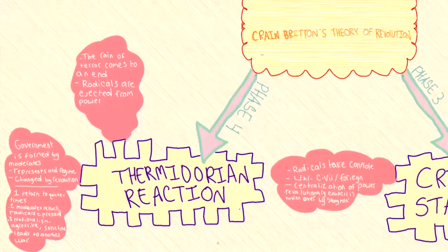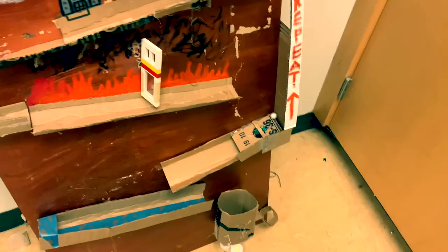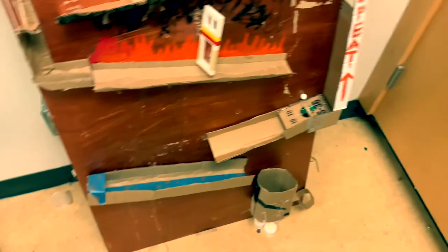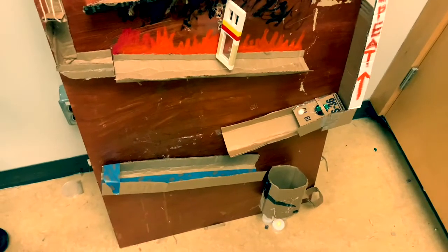The fourth and final phase is the Thermidorian reaction, where the reign of terror comes to an end. In our machine, the radicals go to jail and the moderates take back control and create a new and more sturdy government.